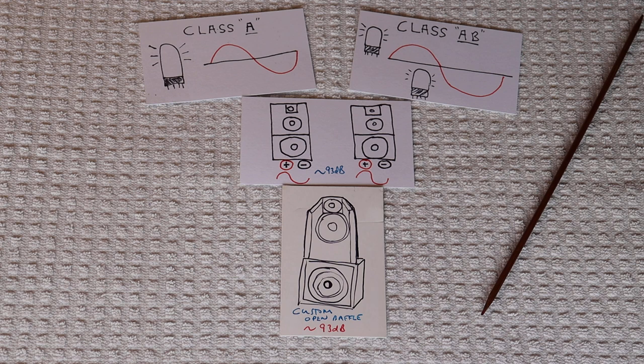The two biggies are X-Max. That's just spelled X and then M-A-X. This is the excursion capabilities of the cone, or how far in and how far out the cone can go. This becomes important with OBs because there's no back pressure. The cone is essentially floating in free air. The other important parameter is the dampening ability of the speaker's suspension. This is referred to as Q, or QTS. It's not hard to see why dampening would be important with no back pressure.